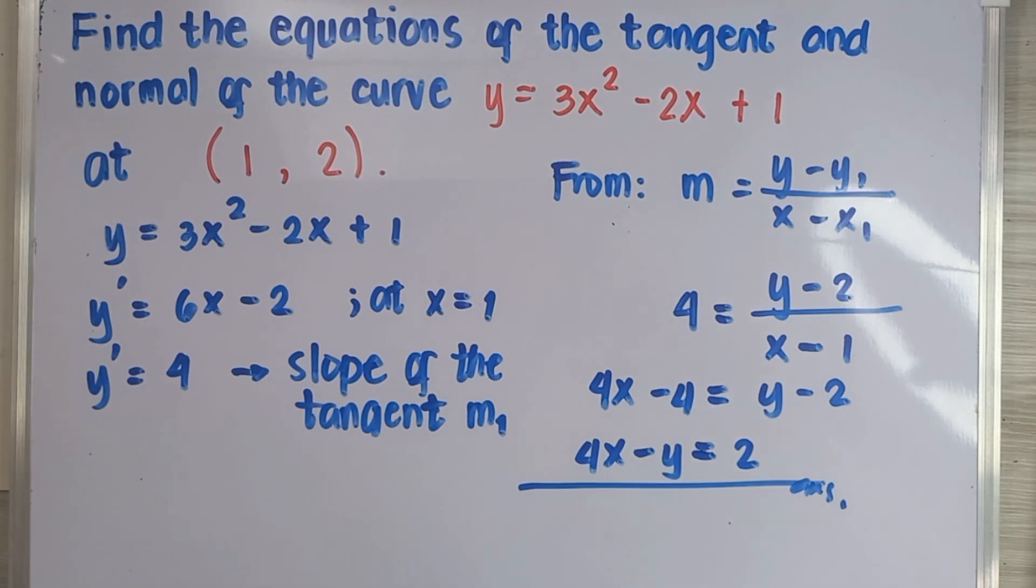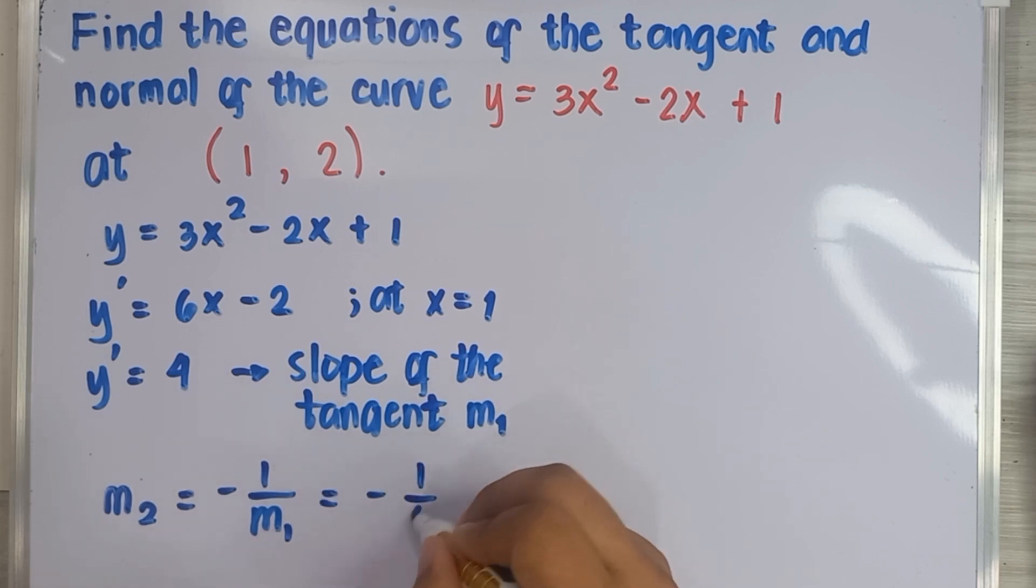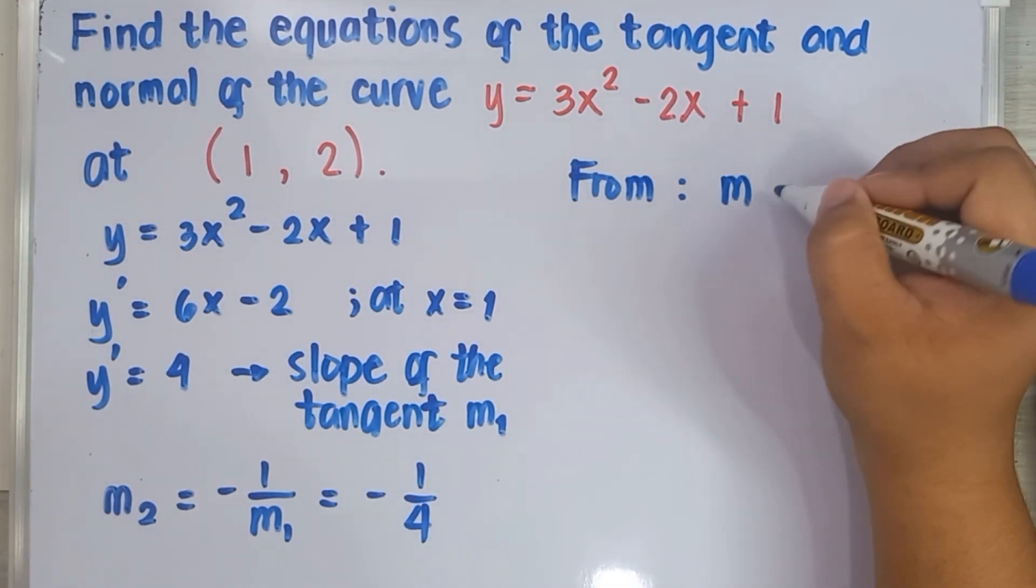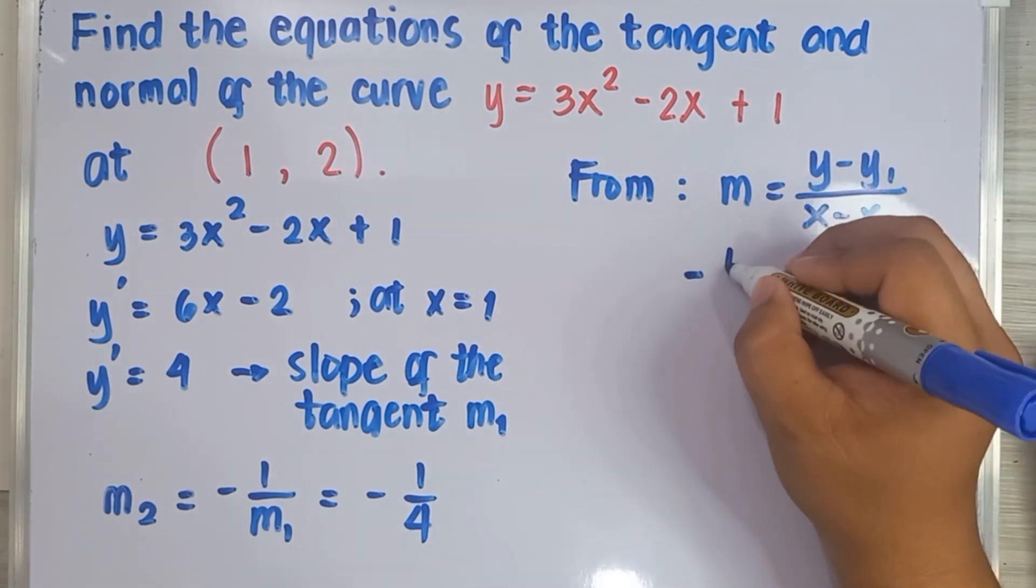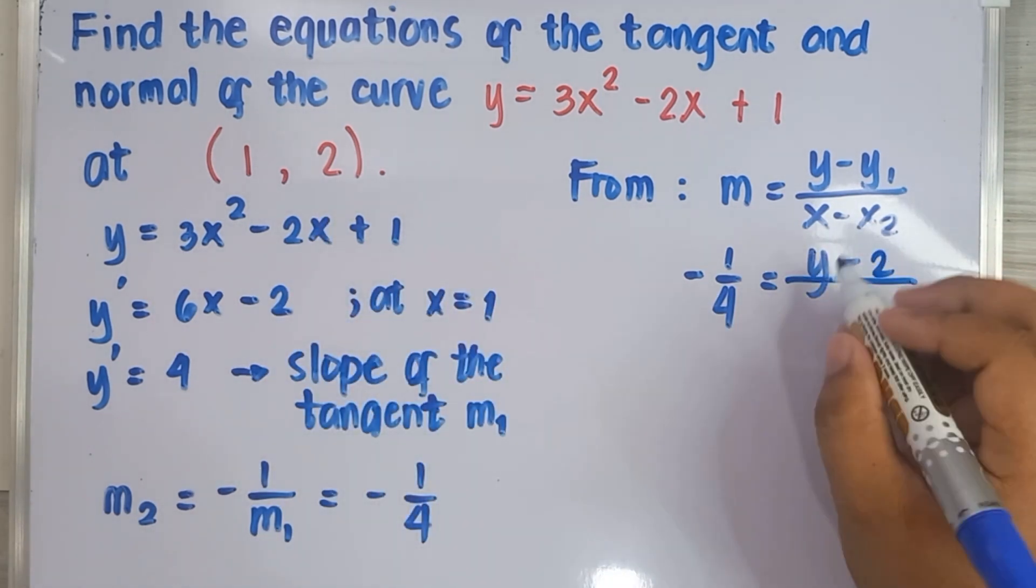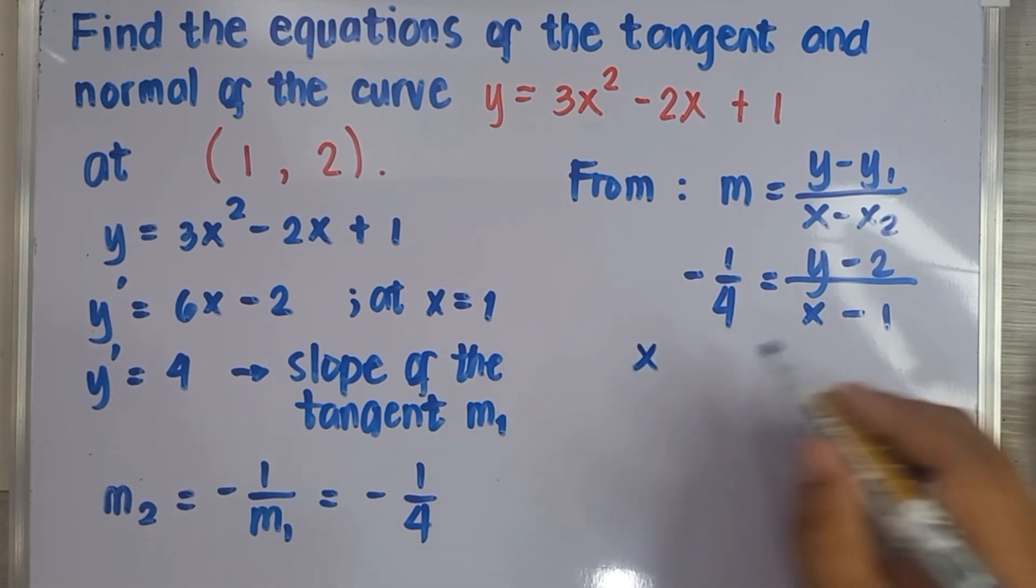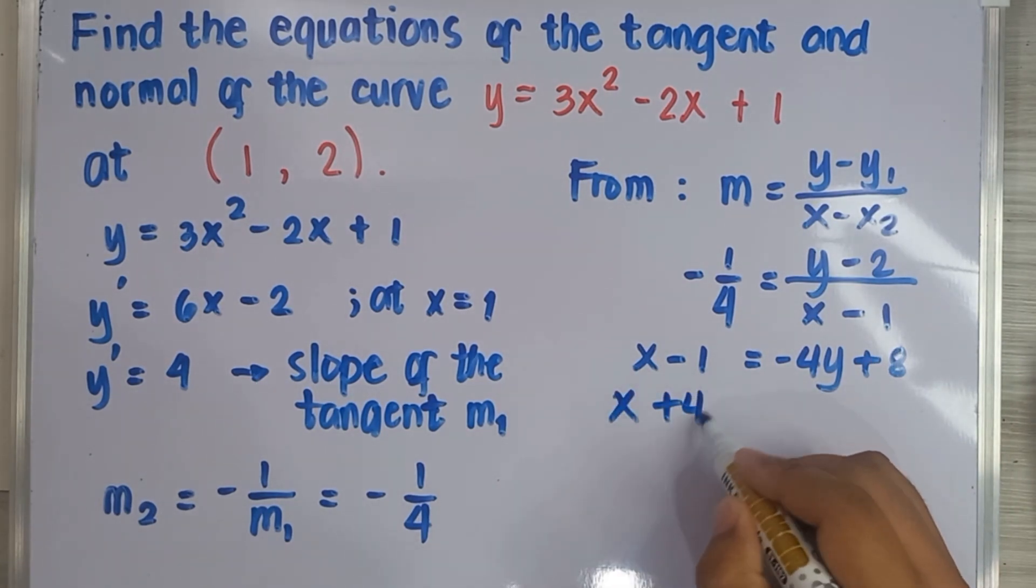And now, let's get the equation of the normal line. First, solve for its slope and that is negative reciprocal of 4, which is -1/4. Use again the point-slope form to get its equation. Simplify. And the equation of the normal is x plus 4y equals 9.